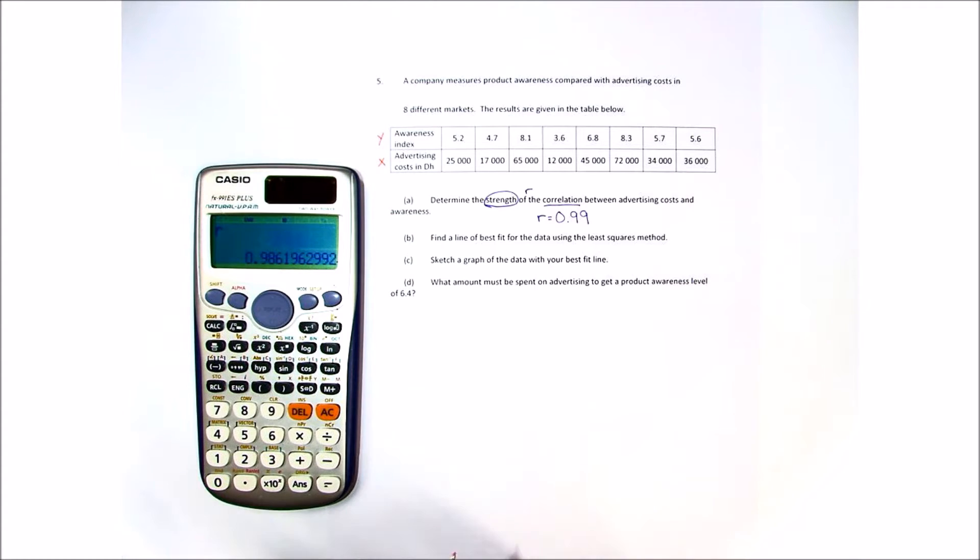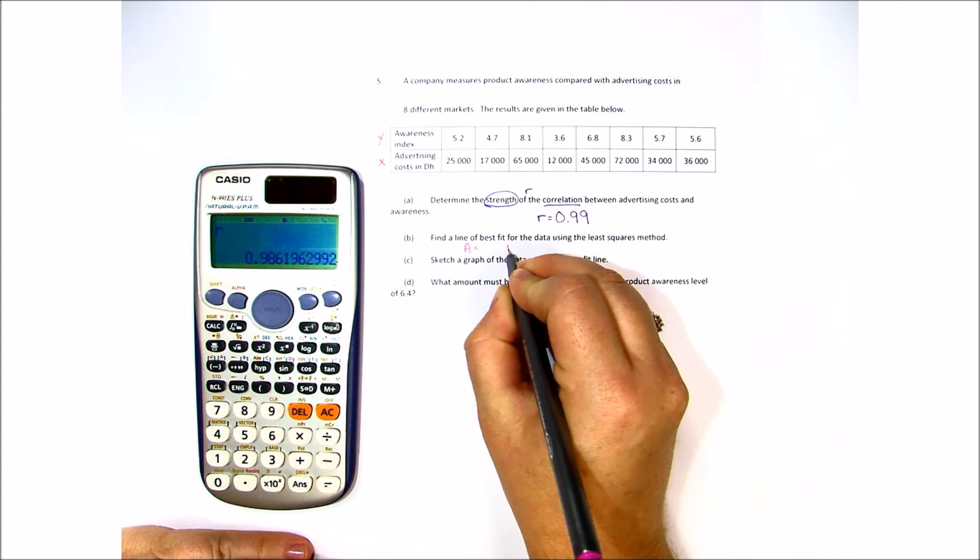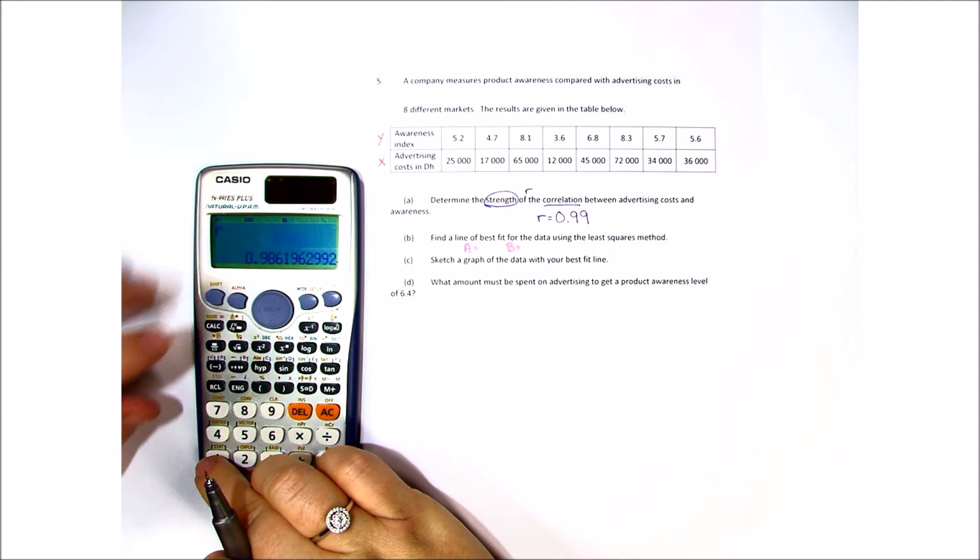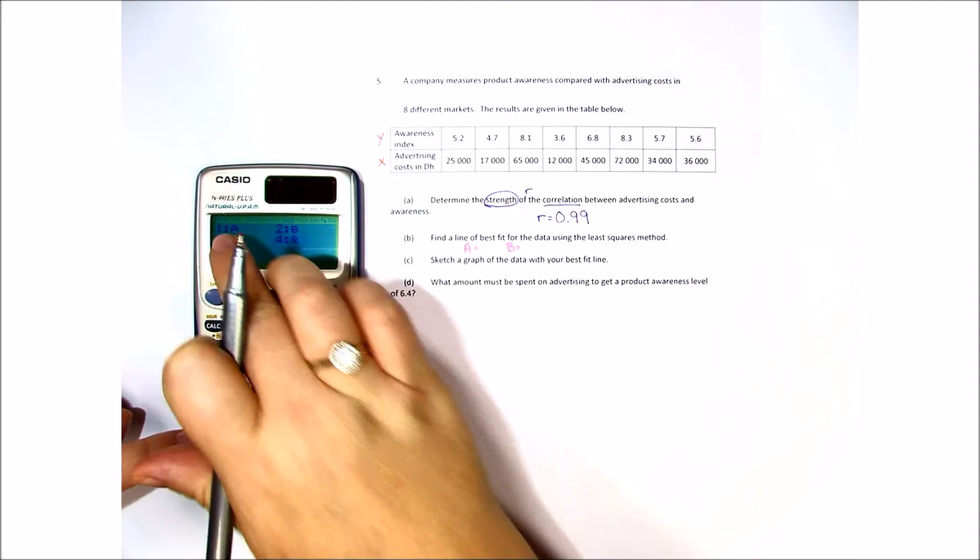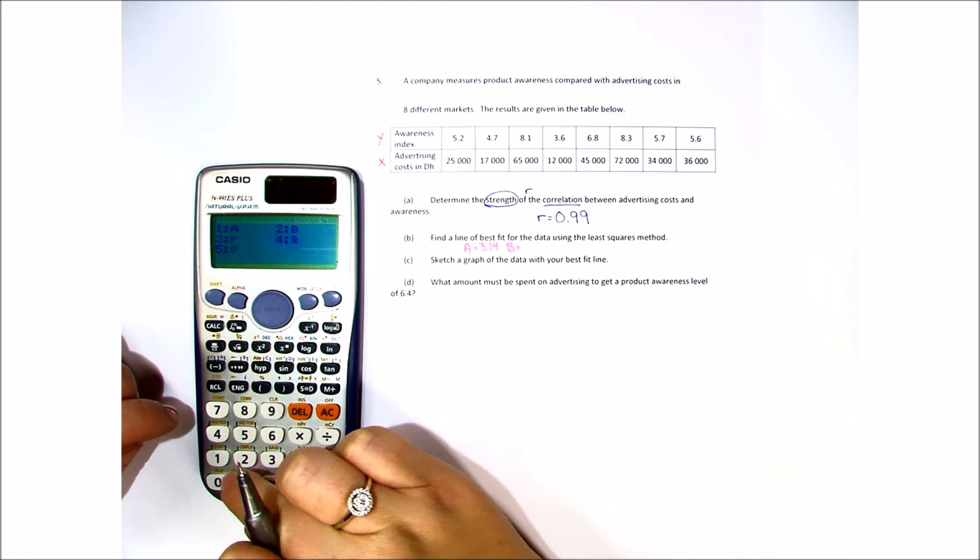Next one says find the line of best fit for the data using the least squares method. Well, we need to find what a is and what b is to do this. So we're going to go ahead and do shift 1, 5. First we're going to look at a, and I find a is 3.14. Do the same with b.